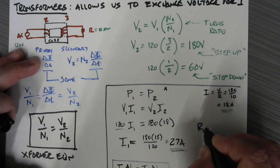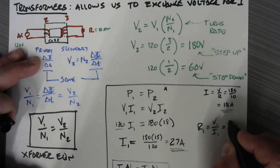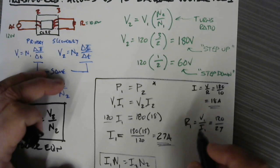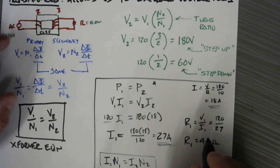So the resistance on the primary side is going to be the voltage on the primary side divided by the current on the primary side. In this case, that's 120 divided by 27. And again with the calculator, 120 divided by 27 equals 4.44. So there is a mysterious 4.4 ohm resistance on the primary side just because of the 10 ohms that's on the secondary side.